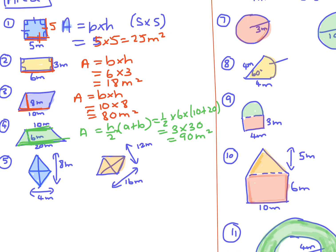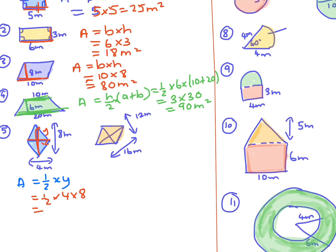For the kite and the rhombus, the formula is a half times x times y, where x and y are the diagonals. So it's going to be a half times 4 times 8, which is a half times 32, giving 16 meters squared.